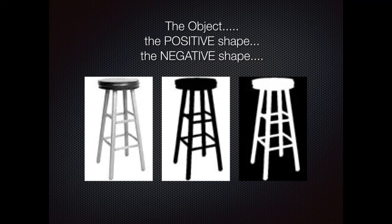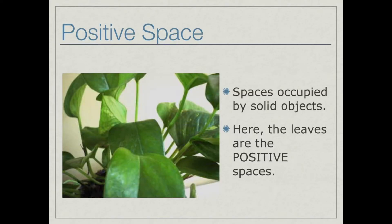Now on the last image, where the air around the stool is black, that black represents the negative shape.